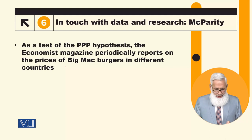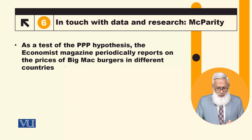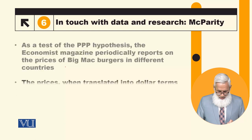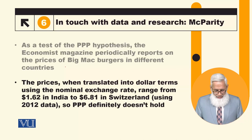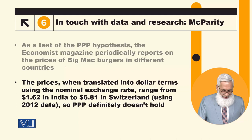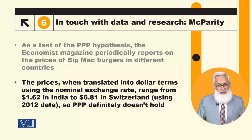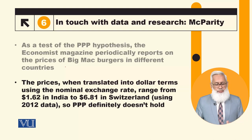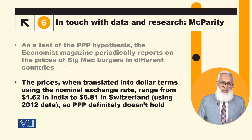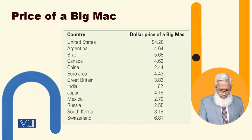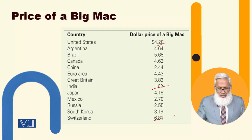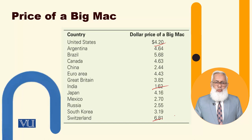So as a test of this purchasing power parity hypothesis, the Economist magazine periodically reports on the prices of Big Mac burger in different countries — کہ burger کی prices مختلف ملکوں میں dollar terms میں وہ magazine report کرتا ہے۔ The prices when translated into dollar terms using the nominal exchange rate range from 1.62 dollars in India to 6.81 dollars in Switzerland (2012 data)۔ اس کا مطلب یہ ہوا کہ purchasing power parity hold نہیں کری — اگر hold کرے گی تو dollar terms میں برگر کی price تمام دنیا میں ایک ہی ہونی چاہیے۔